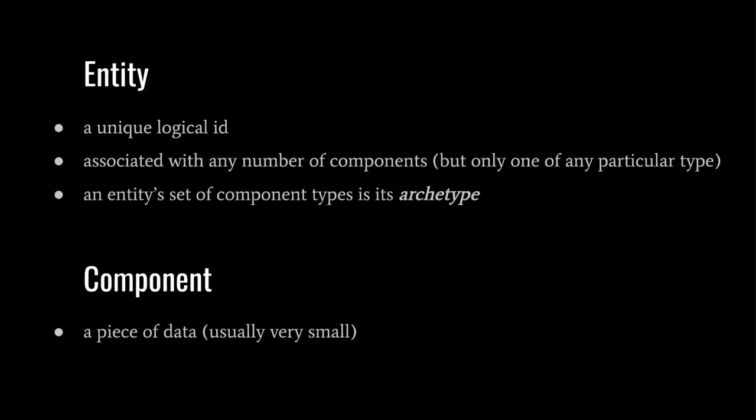An entity is just a unique integer ID number, and an entity can have any number of components associated with it. For a single component type, however, a single entity can have only one instance. The set of component types associated with an entity is called its archetype. Like the columns of a relational table, there is no sense of order to the components — an archetype of A, B, and C is the same regardless of order. While there is no hard size limit, it's generally best to keep component types small, under 100 bytes, splitting many fields into very small component types.